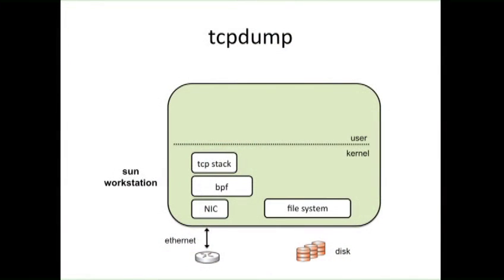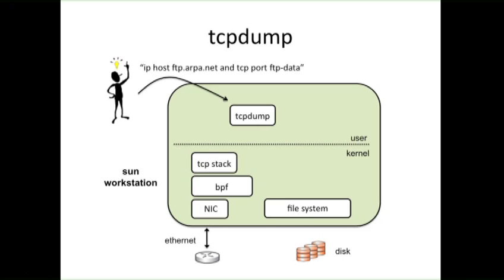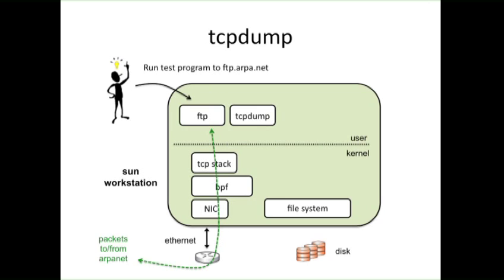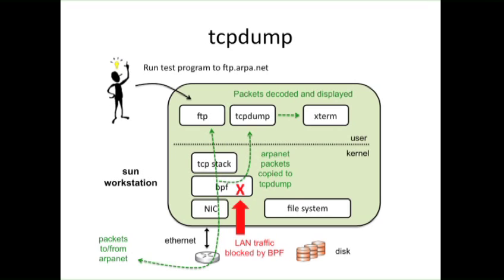The network monitoring tool on the Sun workstation looked like this: you had your network interface, your device driver, your TCP stack, and BPF sandwiched in between. If you wanted to capture just the packets of one connection, you'd run TCPdump with a filter — for example, to pick out FTP data packets from a particular FTP server on the ARPANET. TCPdump would translate that into a BPF program downloaded into the kernel. You'd fire up your FTP program, and TCPdump would grab all the packets of that one connection while blocking all the heavyweight LAN traffic from going up the stack — so you wouldn't miss any packets.